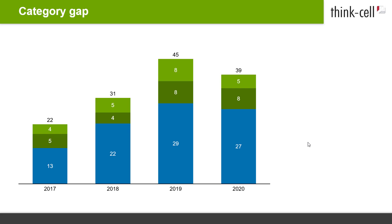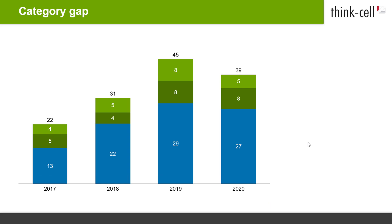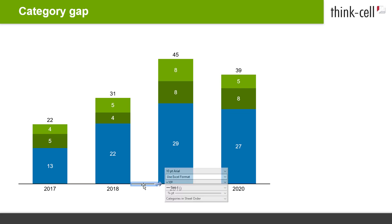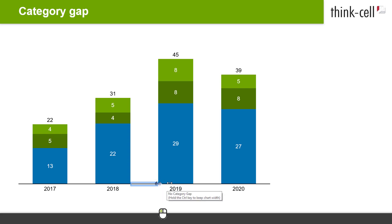Now let's turn back to the category axis and look at the spacing between columns. Basic spacing is determined by the column width and the chart size. When you decide you would like to have extra spacing between, for example, the second and third column, you can insert a category gap. Click on the baseline between two columns at the point where you want the category gap to be, then click on the drag handle, hold down the mouse button, and drag to the right.